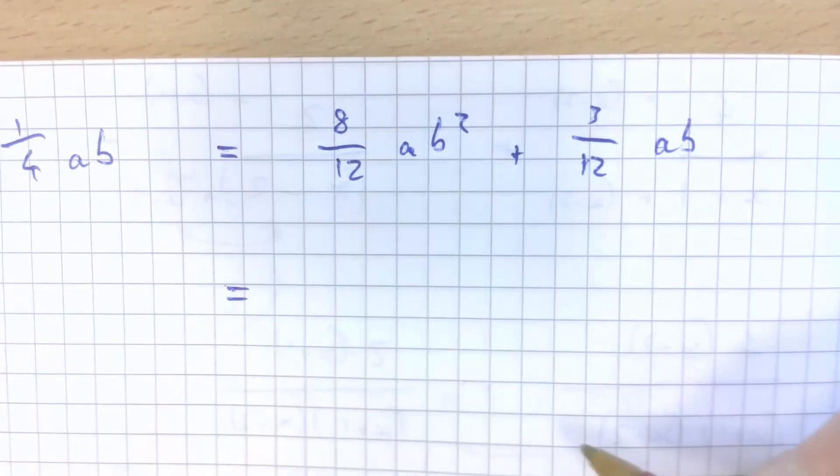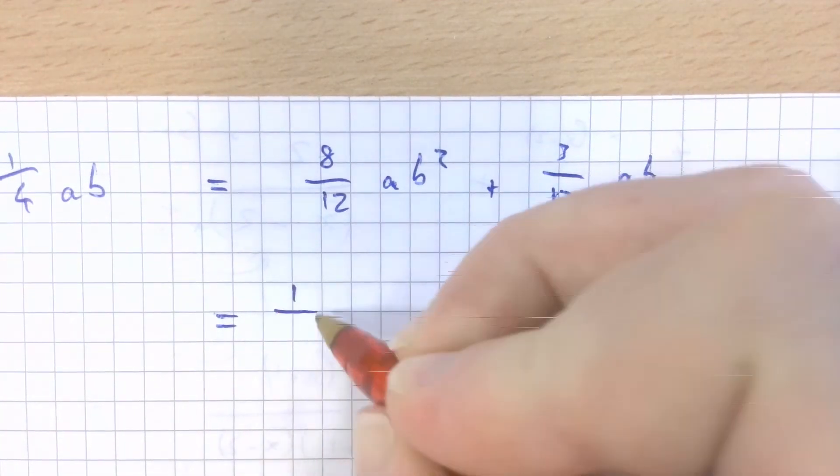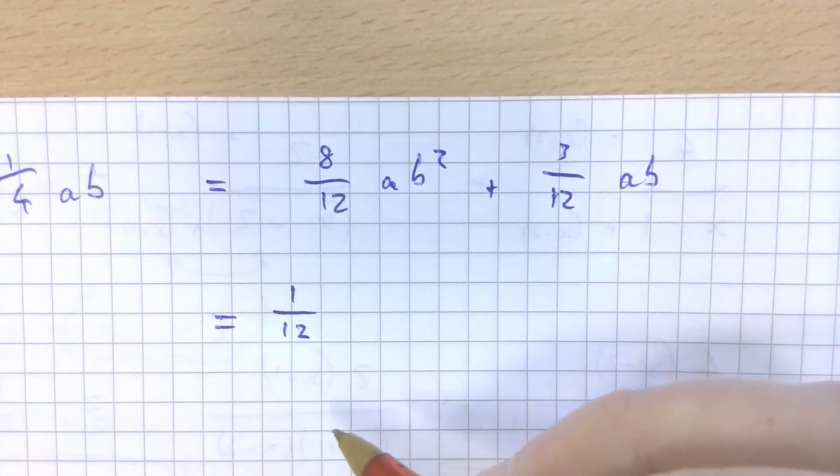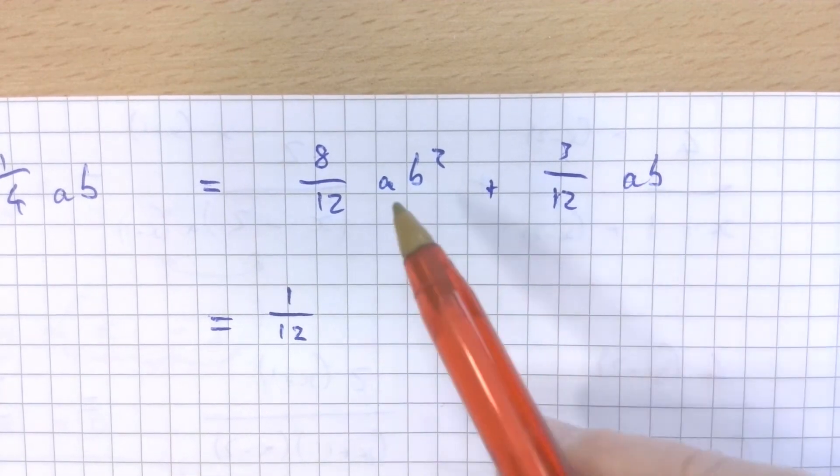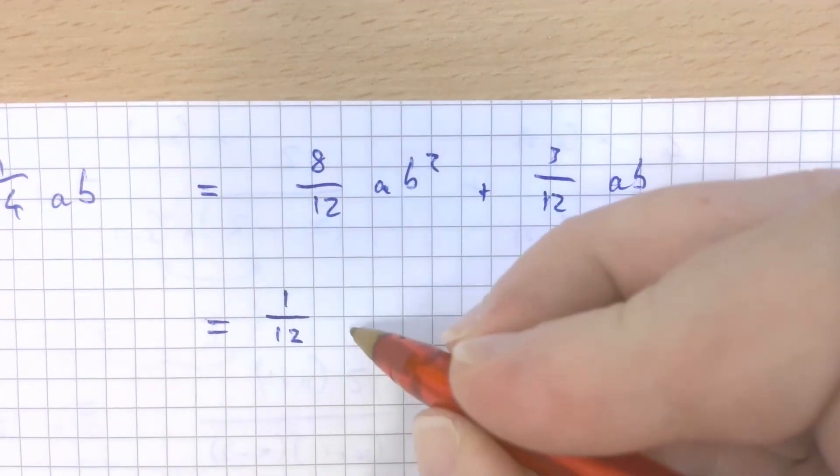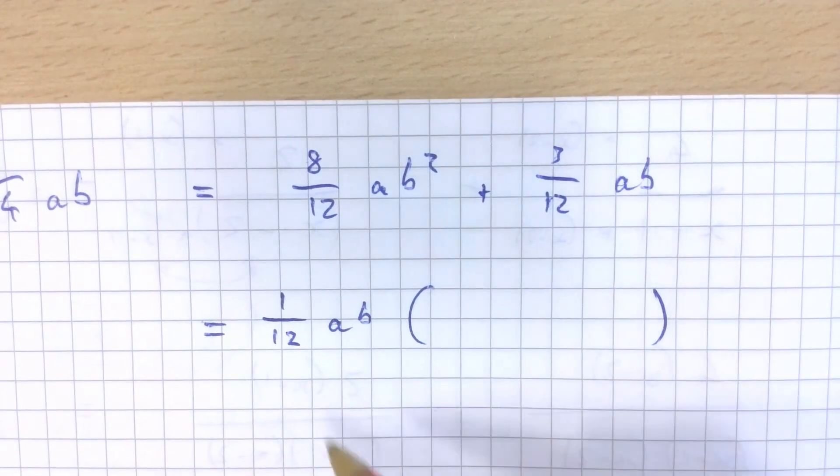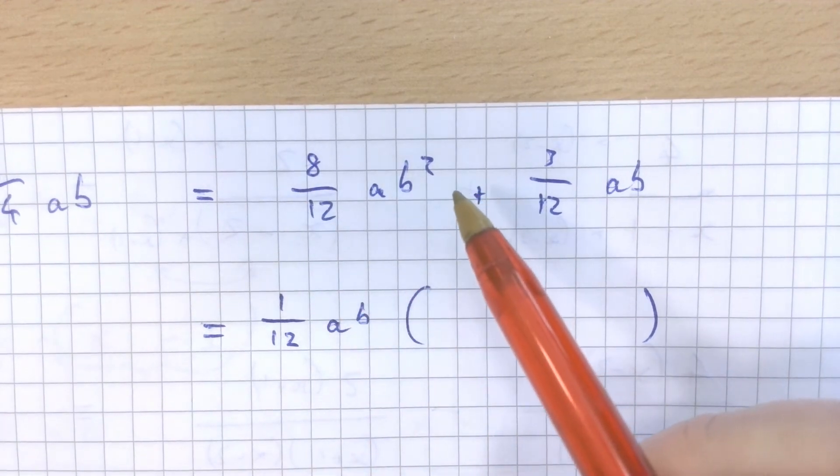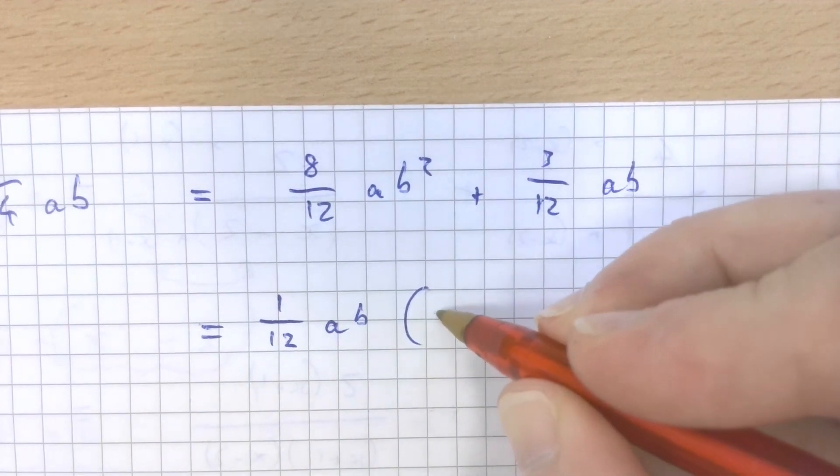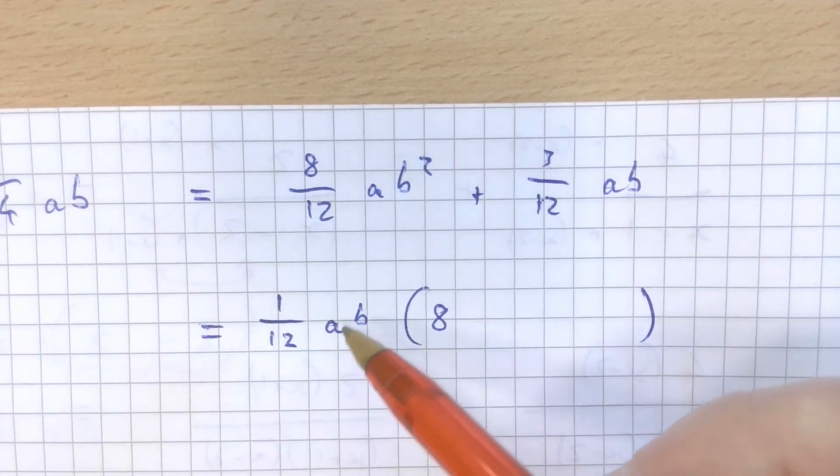So when it comes to factorizing this, hopefully you should see, taking out 1 twelfth, this is going to be how we're going to make this more straightforward. And then a b squared and a b, what's common between both of those? a b is going to be common between both of those. What do I times 1 twelfth of a b by to make 8 over 12 a b squared? You should see that that's 8 to make the 1 twelfth into 8 over 12.